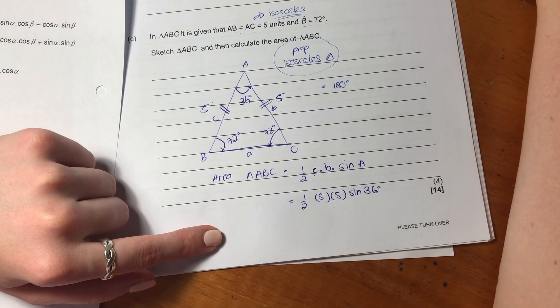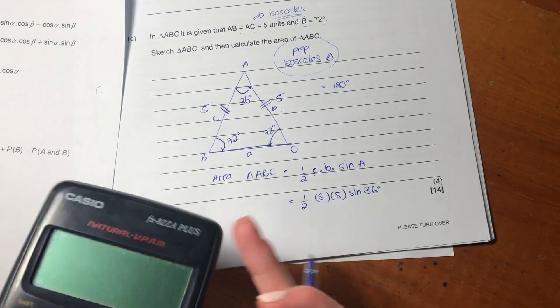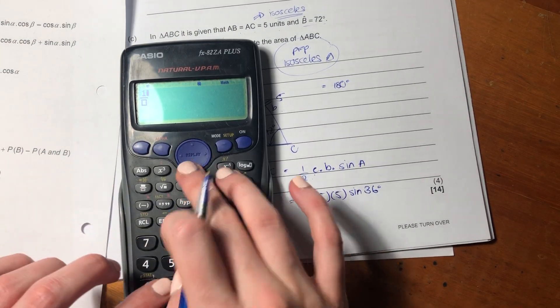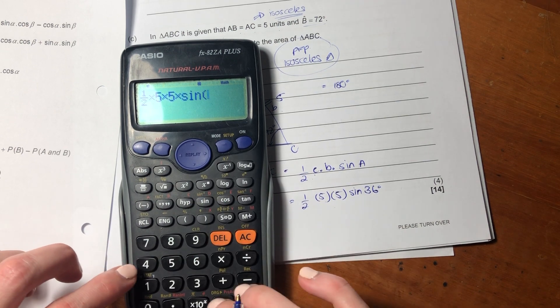So if we now have that, all we have to do is to plug that into our calculator. Not a problem. Let's quickly plug that in. So it's one over two times five times five times sine 36.